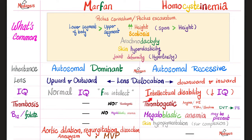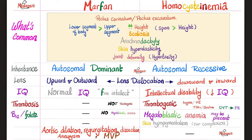Marfan is not thrombogenic, but homocystinemia is highly thrombogenic. Homocystinemia is more likely to cause angina, myocardial infarction, transient ischemic attacks, ischemic strokes, deep vein thrombosis, pulmonary embolism, Budd-Chiari syndrome (thrombosis of hepatic veins), and mesenteric venous thrombosis. In Marfan syndrome, there is no thrombosis.